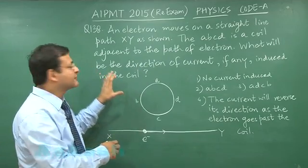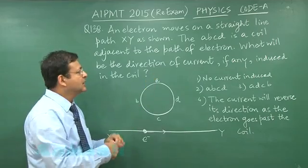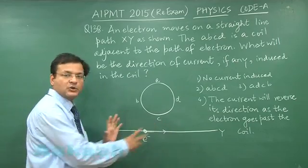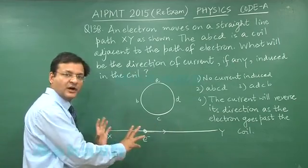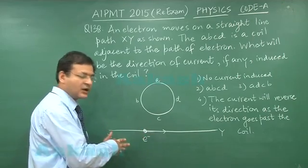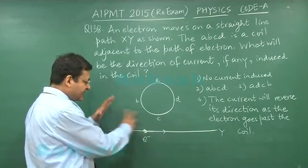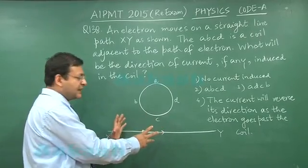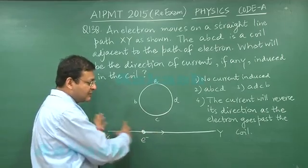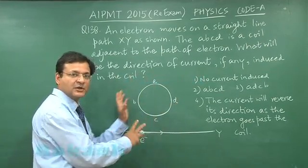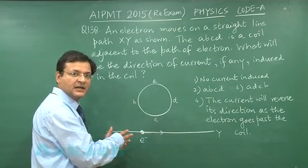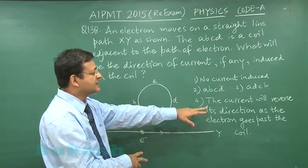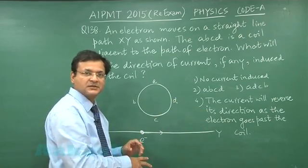They are asking what will be the direction of current induced — this is a chapter on electromagnetic induction. This electron is a free electron, not flowing inside a wire, so it creates an electric field that is moving. As it approaches, it will have one kind of effect, and once it is receding — moving towards Y and away from the coil — it will have the reverse effect. So the correct answer is option 4: the current will reverse its direction as the electron goes past.